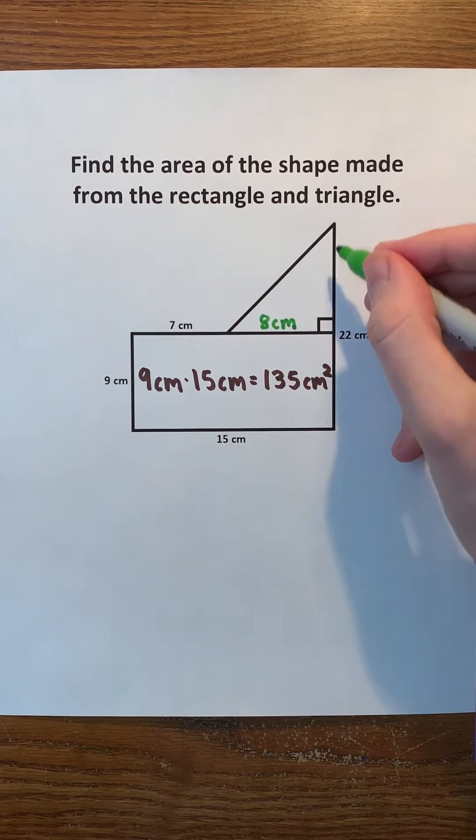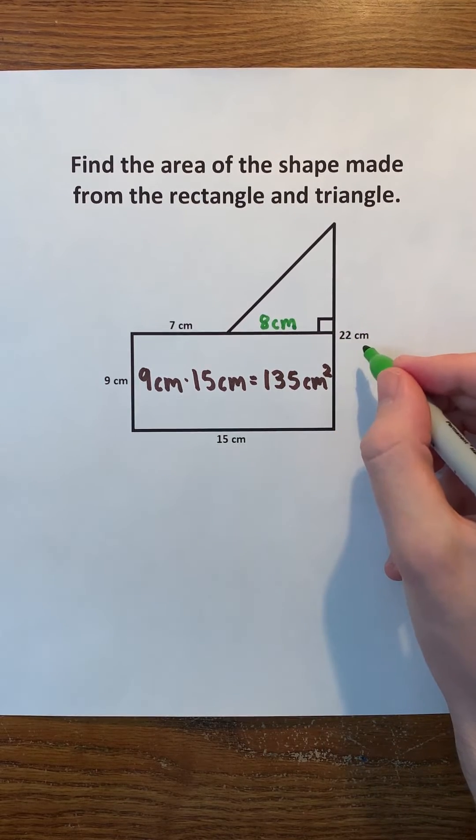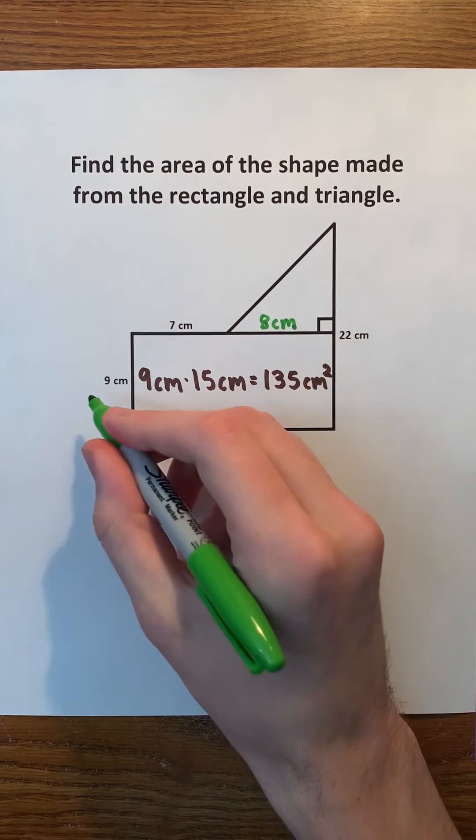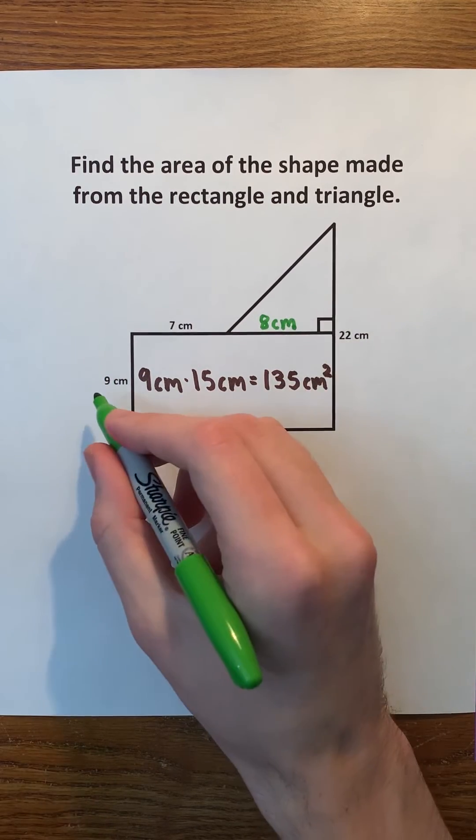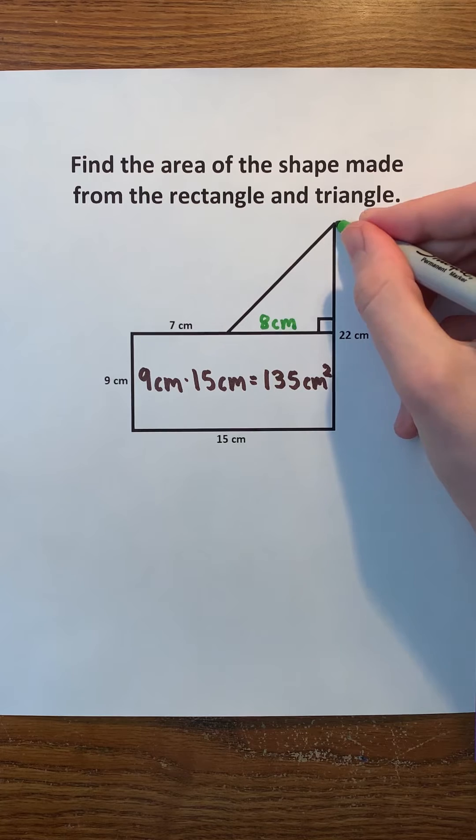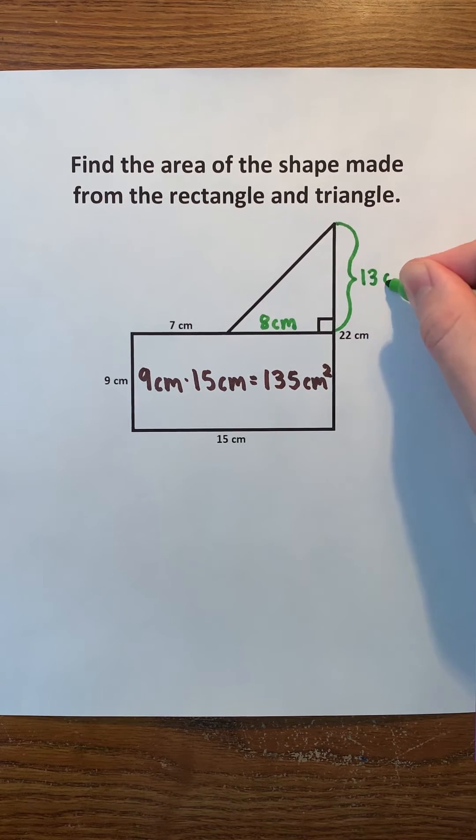Then, notice that this other side has a length of 22 centimeters and remember that the width of the rectangle has a length of 9 centimeters. So, we can subtract 9 from 22 to see that the height of the triangle is 13 centimeters.